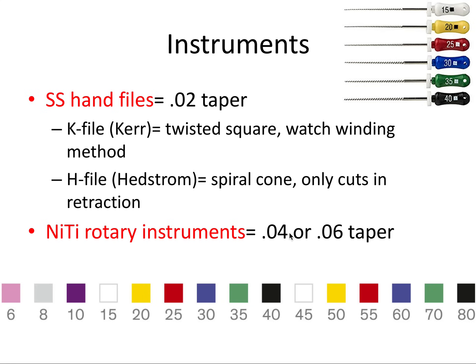We also have NiTi rotary instruments — nickel titanium rotary instruments. As opposed to the stainless steel files which have a 0.02 taper, these have a 0.04 or 0.06 taper, so they get a bit thicker more quickly as you go from the tip.